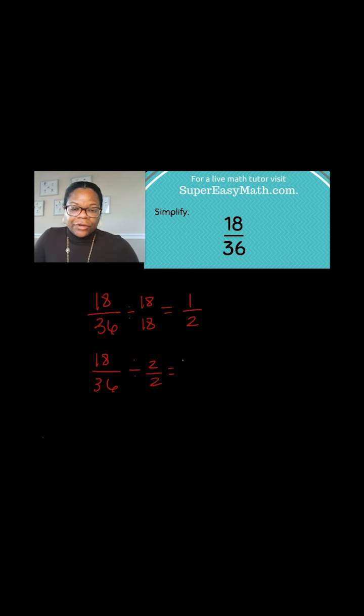Sometimes you can't see right off the top of your head larger numbers that can go into both the numerator and the denominator. So you might need to start with a smaller number like 2. You might say 2 can go into both 18 and 36, and so that would change it into 9 over 18.